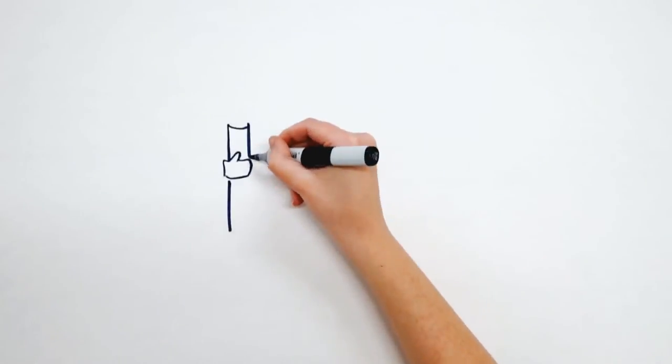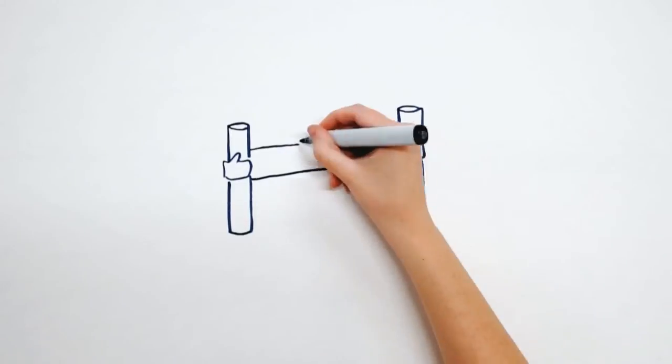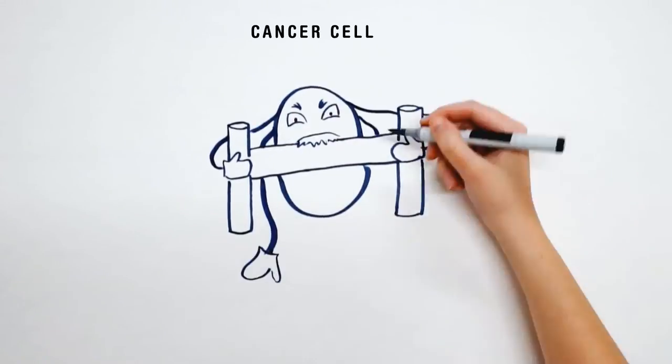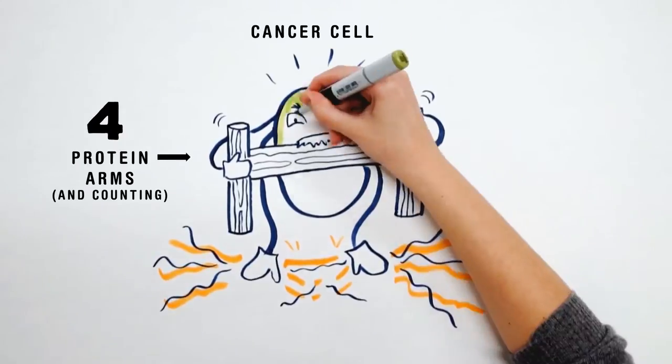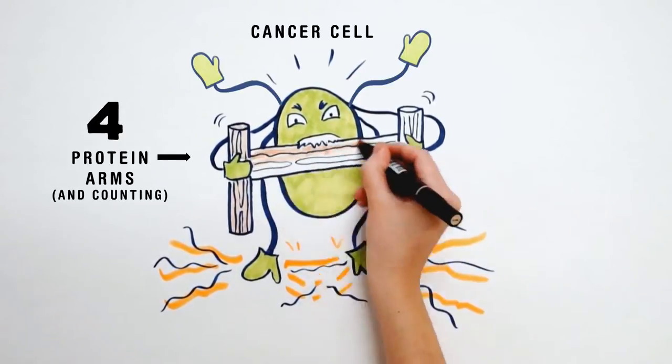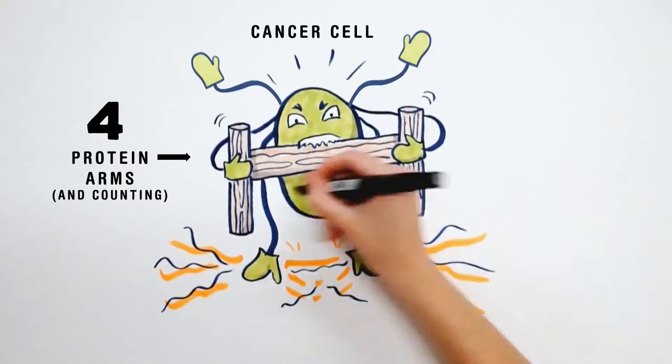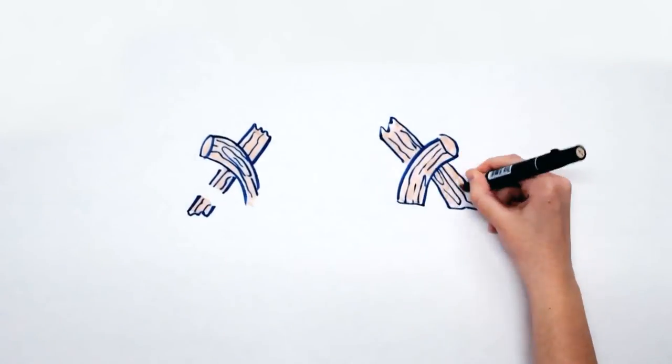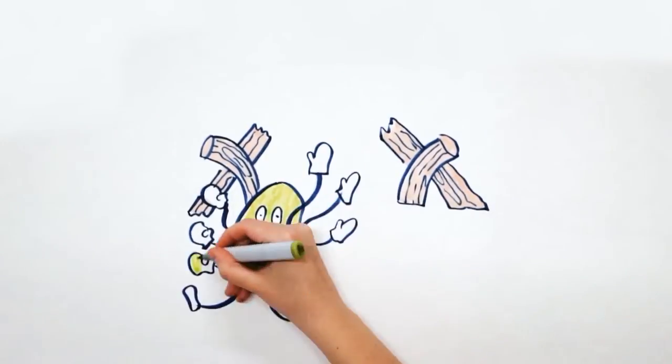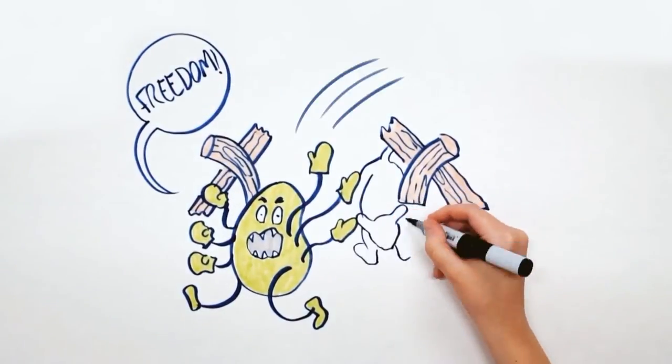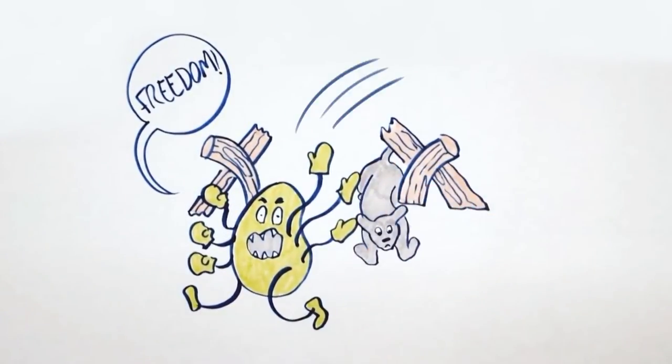Cancer cells on the other hand can get through the membrane by doing two things that healthy cells cannot. First they increase the number of little protein arms they stick through the fence. They do this because they're running out of food, oxygen, or other important resources and they're searching for more. And second they make proteins that can eat through and ultimately sneak through the membrane. The result is a hole in the fence and dogs running through the neighborhood.